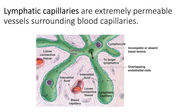Lymphatic capillaries are located almost everywhere there are blood capillaries, except for bone tissue, teeth, the bone marrow, and the central nervous system. The function of lymphatic capillaries is to take up that excess fluid via this very permeable, incomplete endothelial wall with overlapping cells that draw in that excess fluid. That fluid is then called lymph.